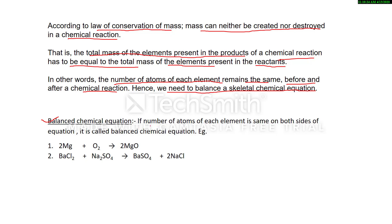A balanced chemical equation is one in which the number of atoms of each element is the same on both sides. For example: 2Mg + O₂ → 2MgO. The coefficient 2 before magnesium indicates two atoms of magnesium, and oxygen is also two atoms on the reactant side, so both sides are balanced with two magnesium and two oxygen atoms.